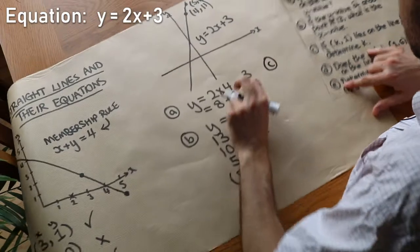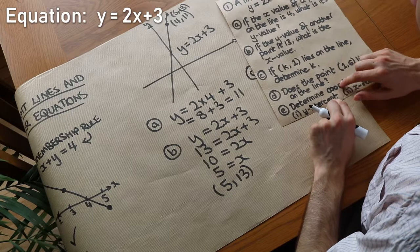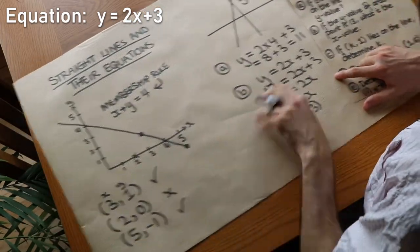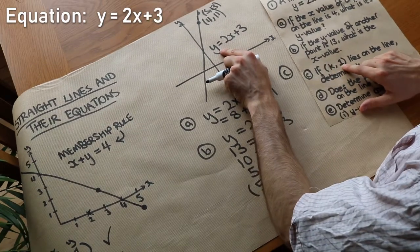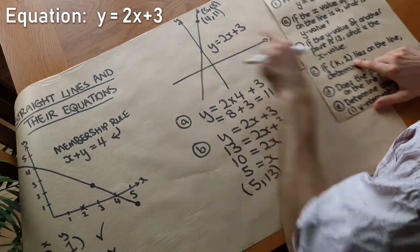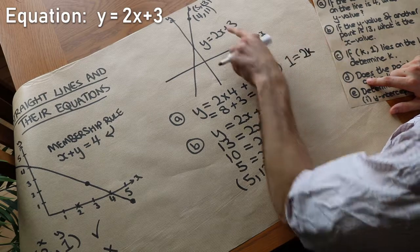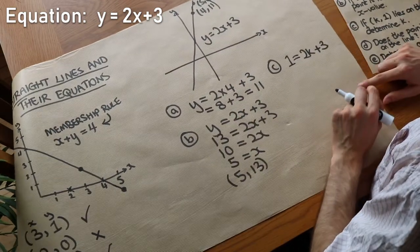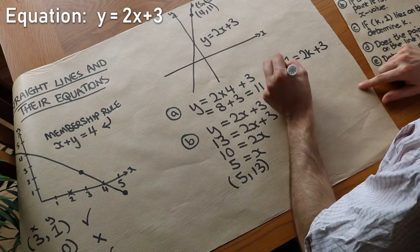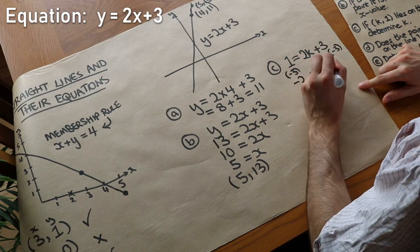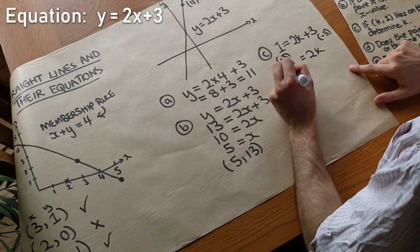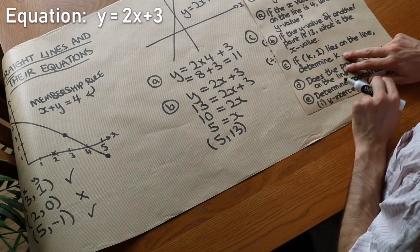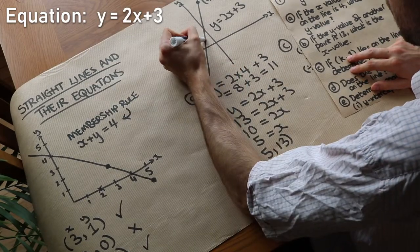Next, the point (k, 1) lies on the line — we want to determine k. If this point lies on this line with this equation then it must satisfy this equation. So we substitute: the y value is 1, so 1 equals 2 times k, giving 2k, plus 3. We subtract 3 from both sides to get −2 equals 2k, then divide both sides by 2, giving k equals −1. So the point −1, 1 is on the line.